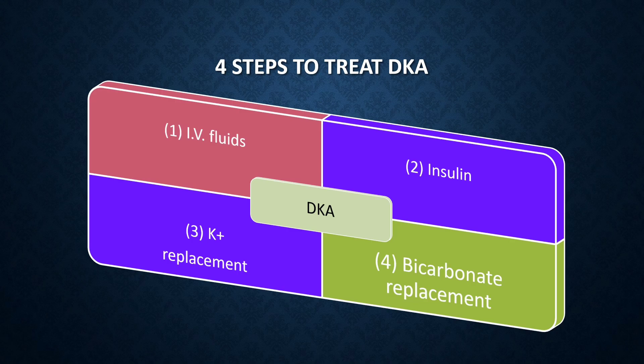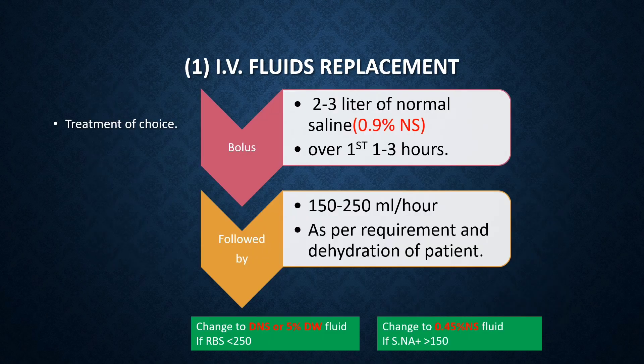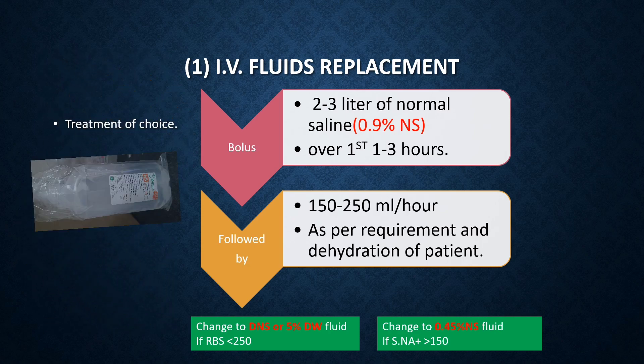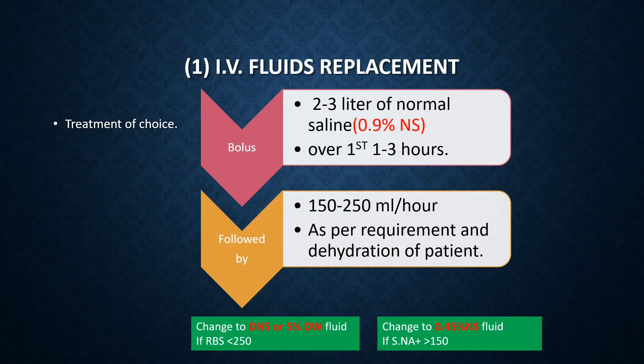The first step is IV fluid replacement. IV fluid is the treatment of choice in diabetic ketoacidosis. First, give a bolus of 2 to 3 liters of normal saline in the initial 1 to 3 hours. The fluid of choice is 0.9% normal saline, followed by 150 to 250 ml per hour as per the patient's requirement and degree of dehydration.